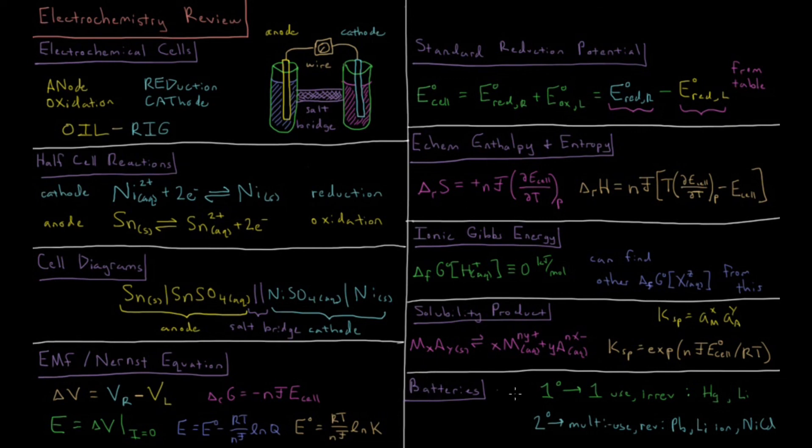Finally, we have batteries. A primary battery is a one-use battery with an irreversible chemical reaction, often in which all participants are solid or liquid, thus outputting a constant voltage. Examples include mercury batteries and lithium batteries. Alternatively, we have secondary batteries, which are multi-use, reversible, and rechargeable. Examples of reversible secondary batteries include lead acid batteries, lithium ion batteries, and nickel cadmium batteries.